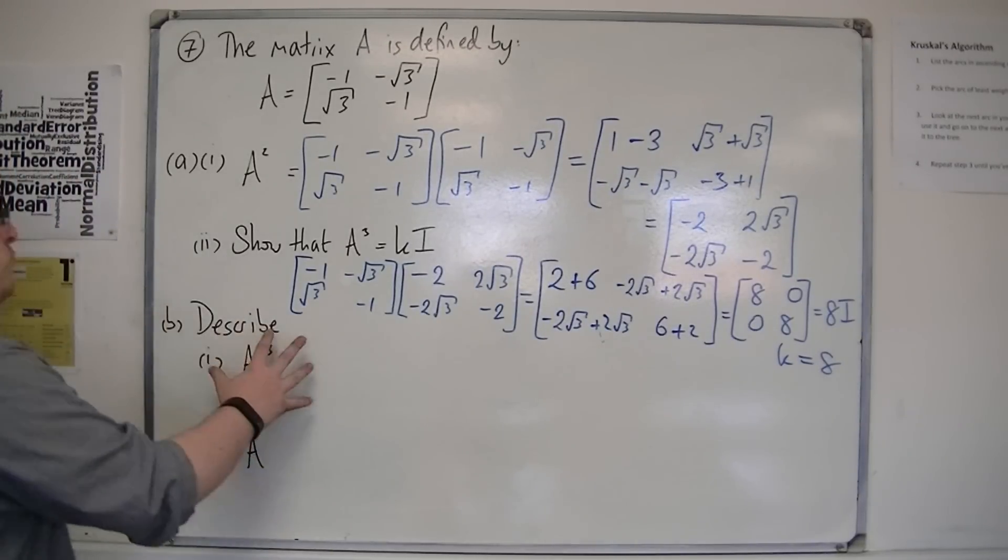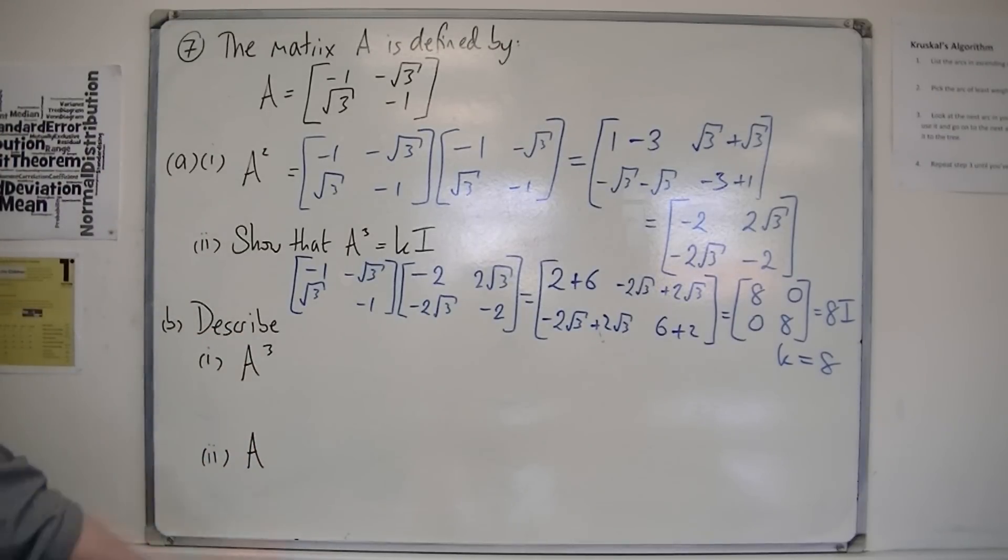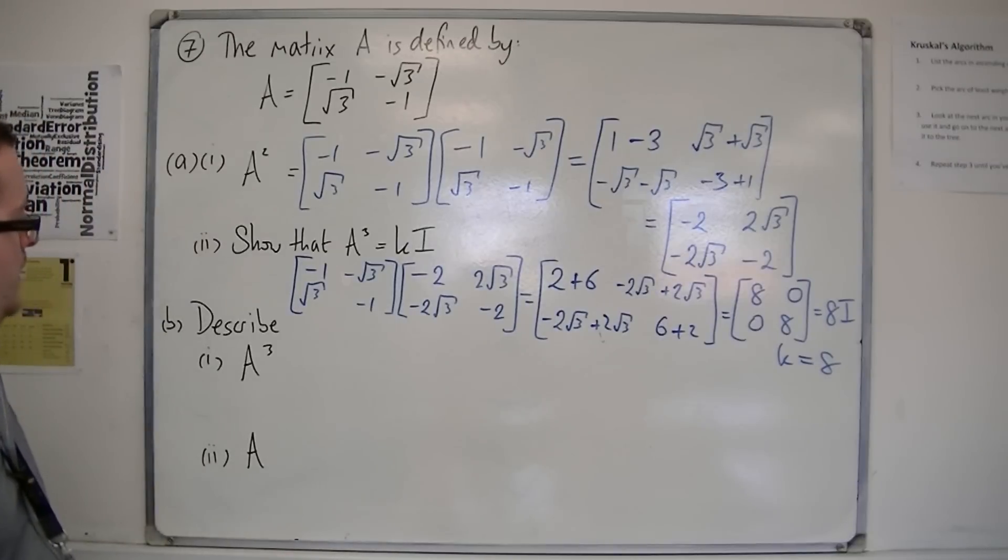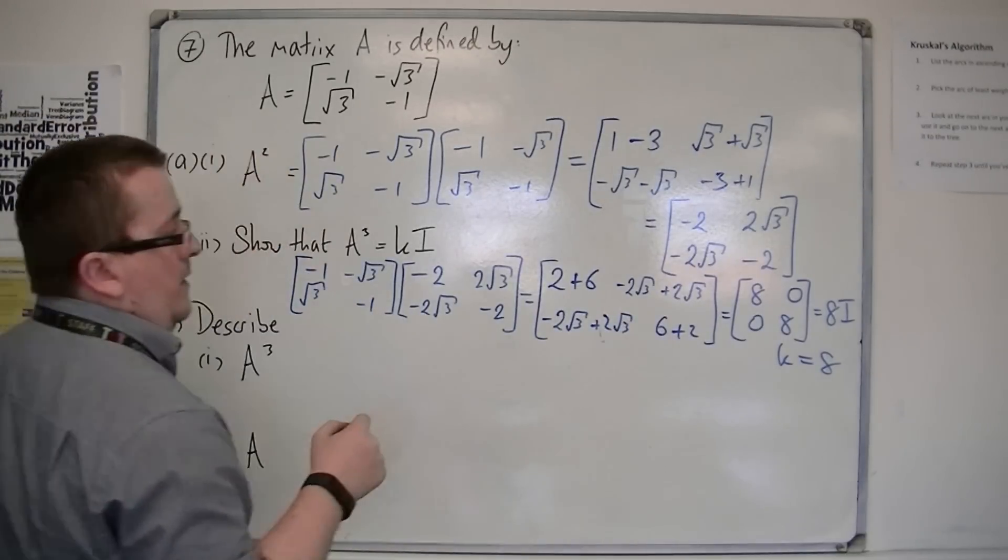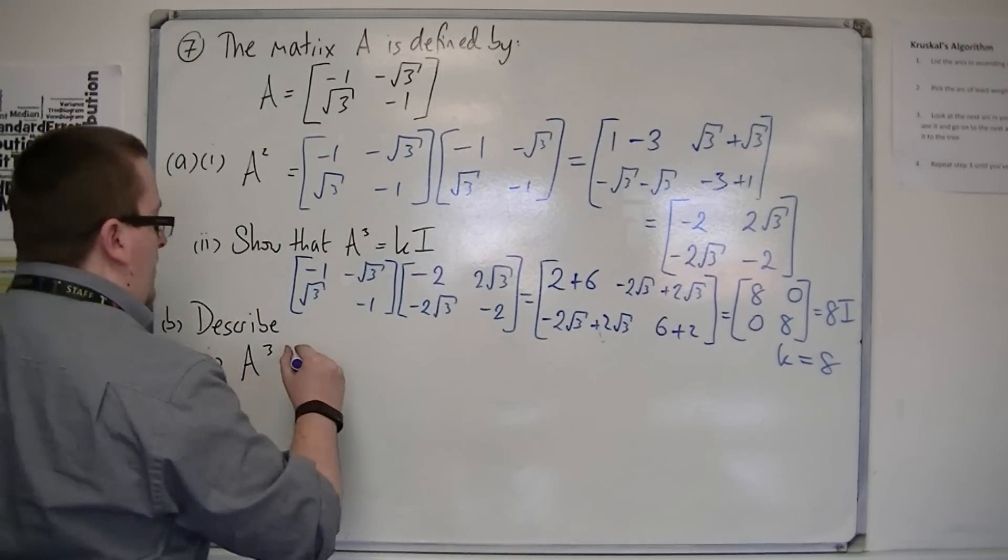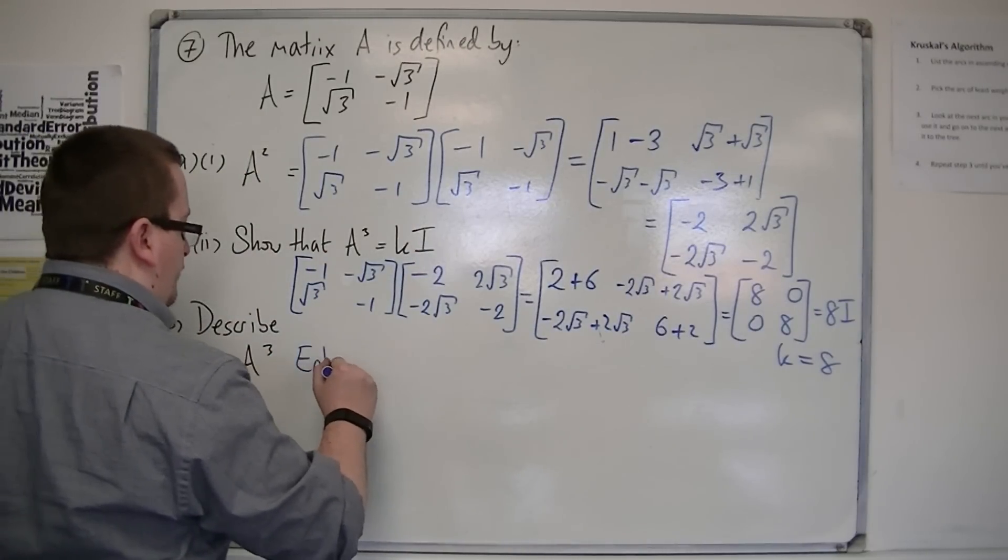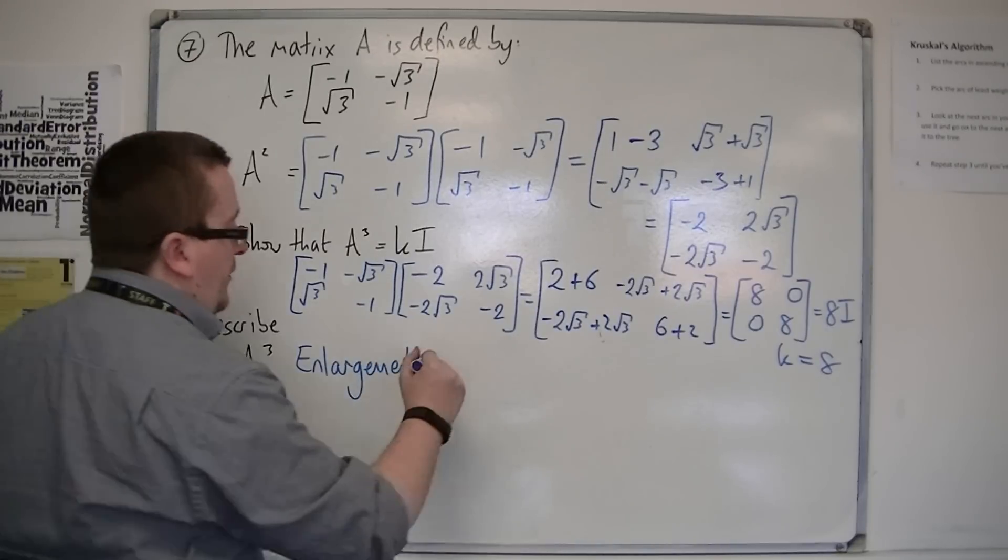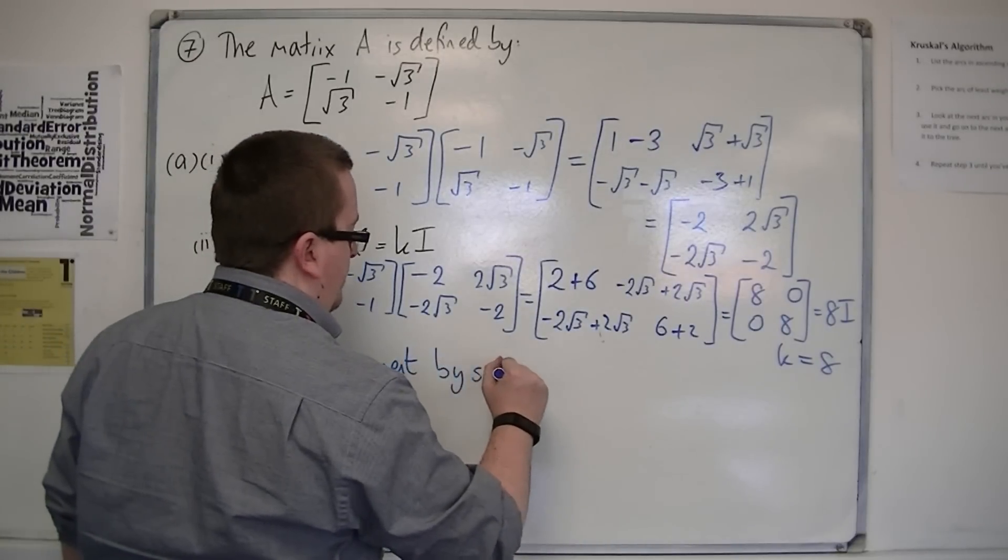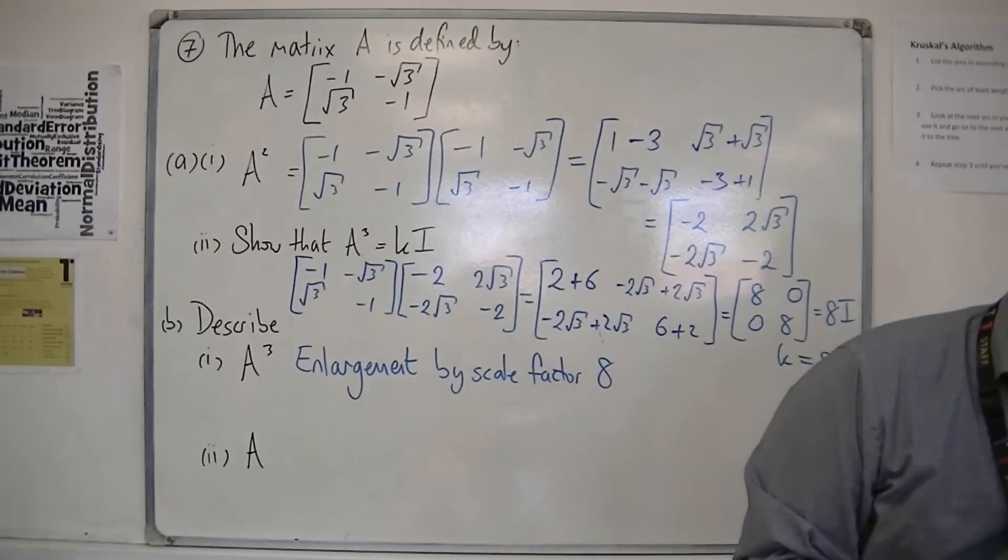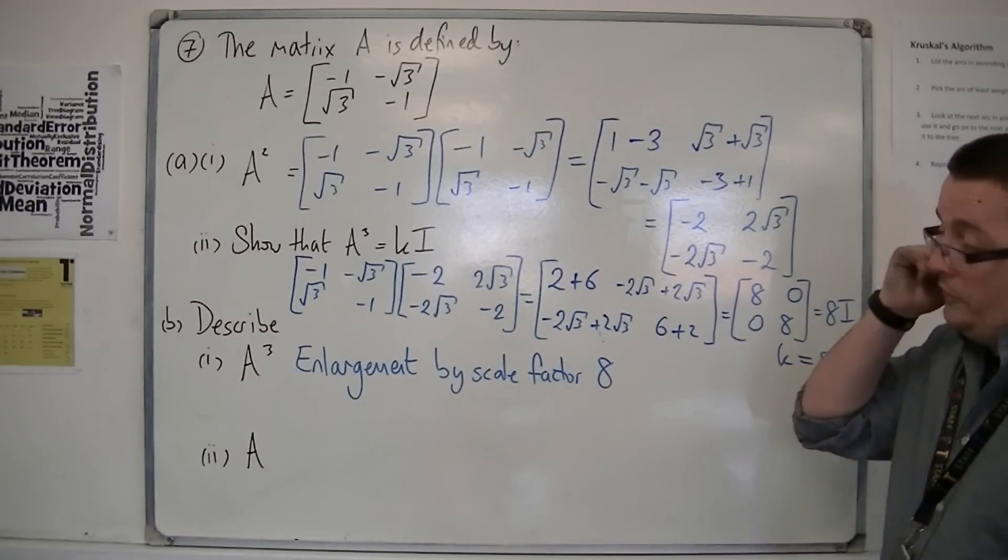So, then, we're asked to describe the two matrices, A cubed and A, where they may be a combination of two transformations. So, A cubed is 8i, or 8, 0, 0, 8. So, that is an enlargement, by scale factor 8. So, that's the first one.